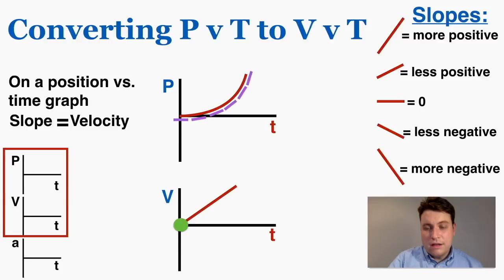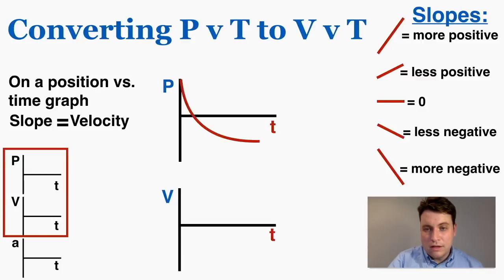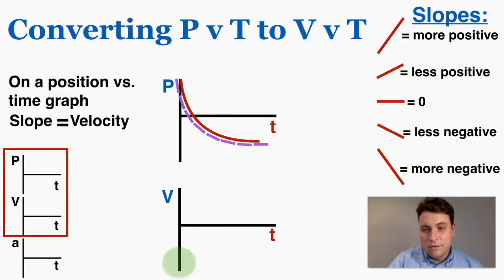Here's another example. With a graph that looks like this, it's difficult to visualize what the velocity graph looks like until you make those tangent lines. The velocity starts off very negative — that first tangent line at the y-intercept is going very far down very fast — so the velocity is very negative, and it eventually goes to zero. That last tangent line is flat, a slope of zero, meaning a velocity of zero. So the velocity starts negative and goes to zero.